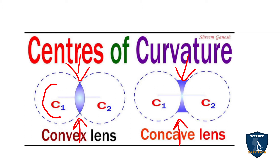So what you have to remember: O is optic center, principal axis is the line through the center, F is principal focus, and C is center of curvature. These are the four things you have to remember.